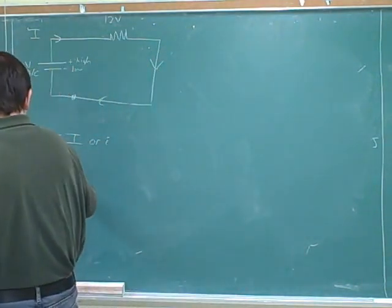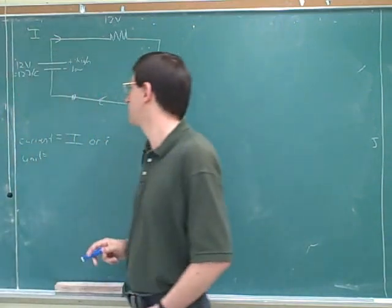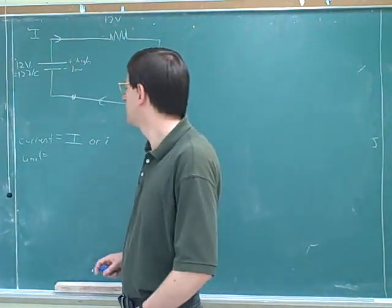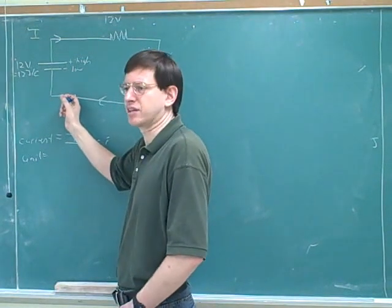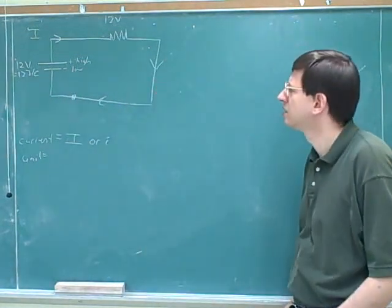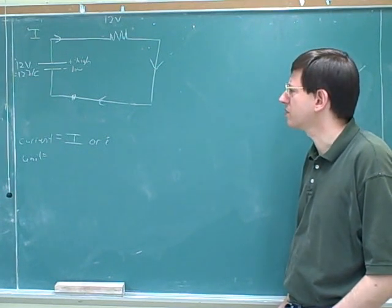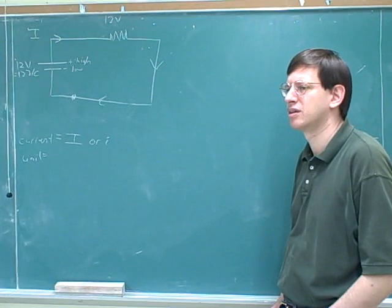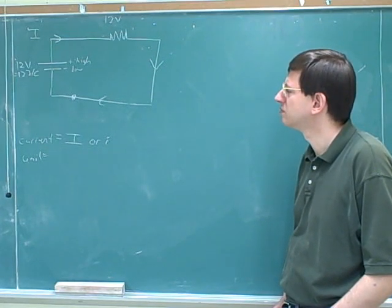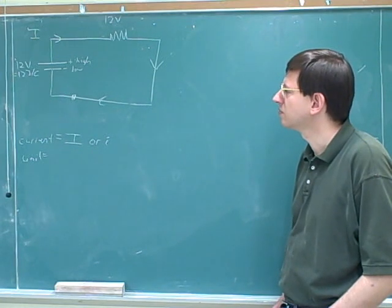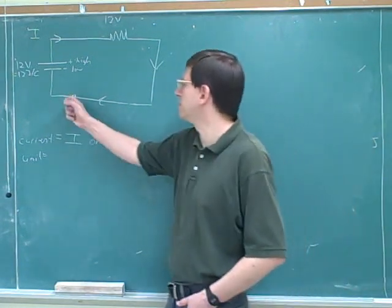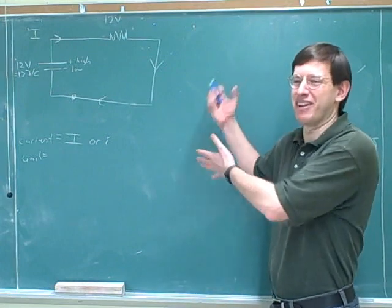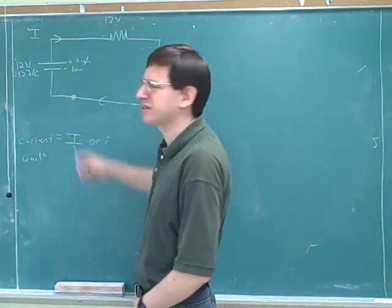Maybe we can figure out what the units have to be. What would be good units for measuring the rate at which charges are passing this point? We need to figure out what would be good units — we're not trying to get a number, just the units. For example, it wouldn't be kilograms per meter cubed — that wouldn't have anything to do with it.